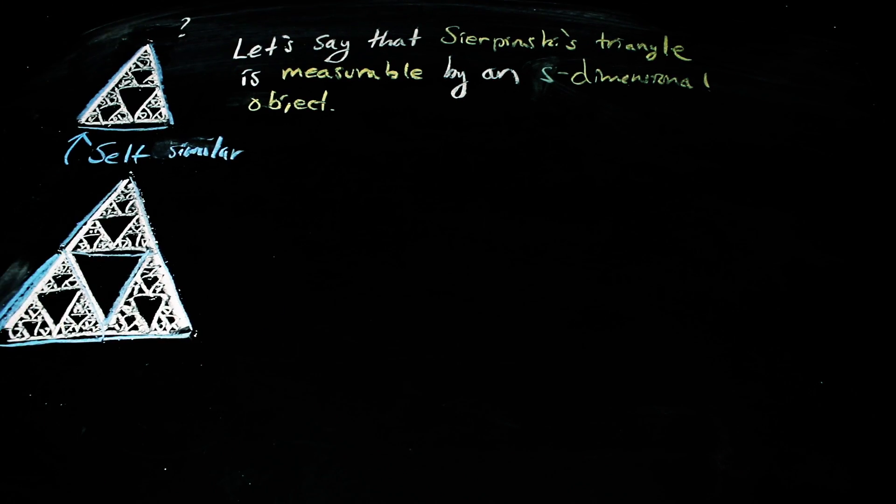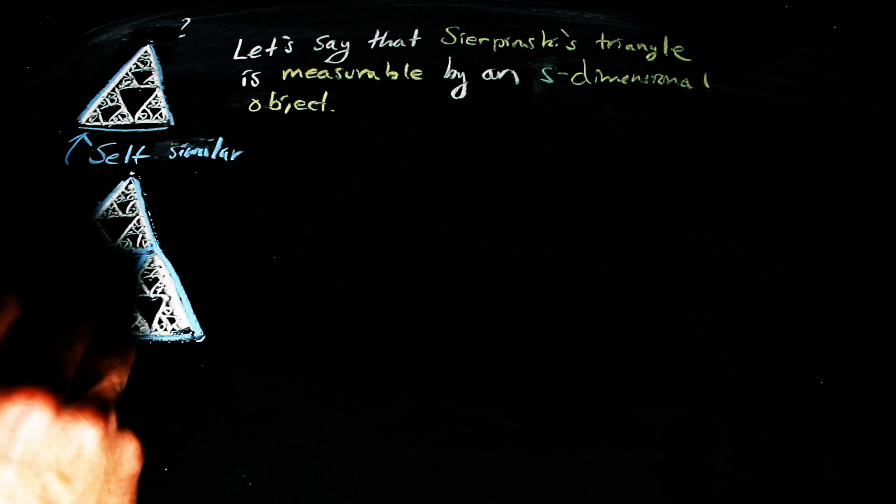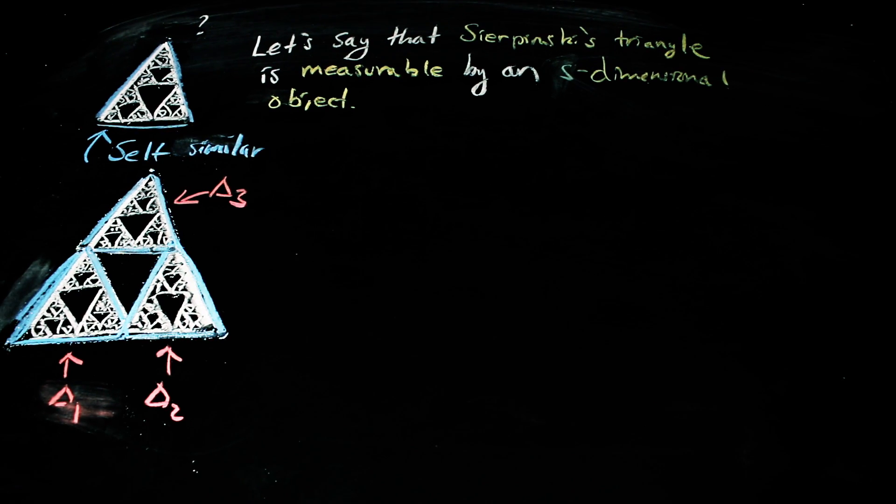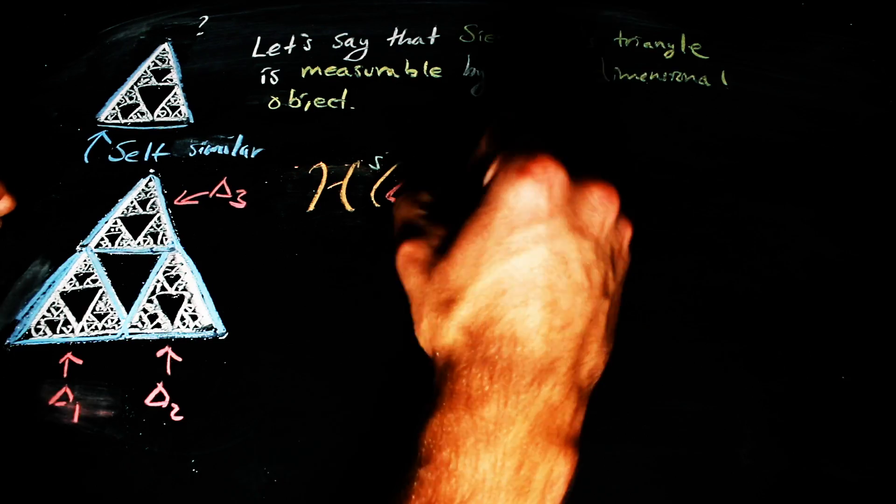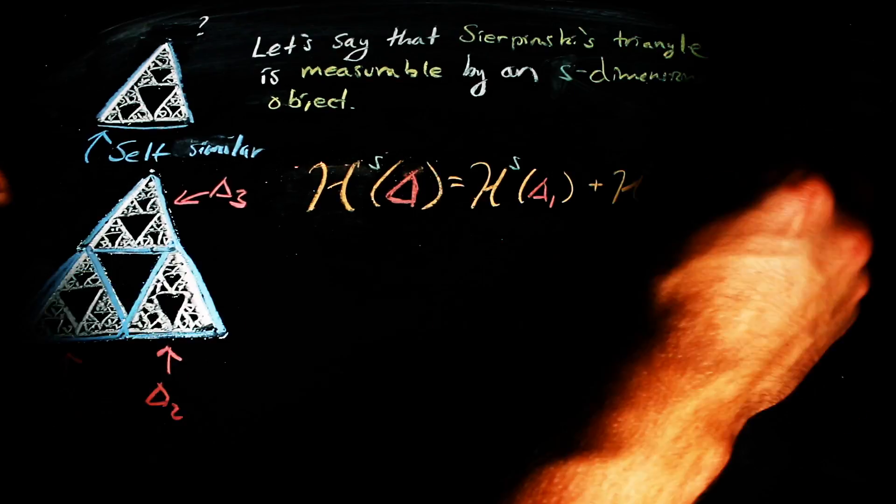Consider these three smaller triangles in the Sierpinski's triangle. Notice that if I measure all three of them, I have actually measured the entire Sierpinski's triangle. So, if I add together these measures, I get the measure of the whole thing.